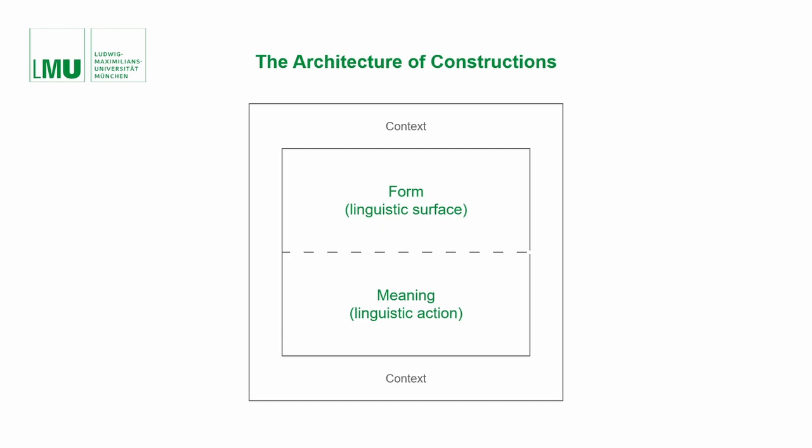This relates also to the second and third principle of literariness introduced earlier. The deeper level, which is related to action, and the fact that both levels are embedded in a special context, points one more thing out: that language is a tool for participation in cultural practices. That is also the reason why I call it an architecture of constructions.